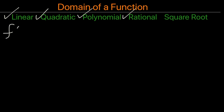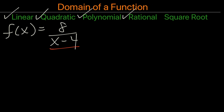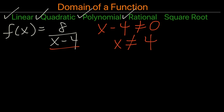Now, here's an example of a rational function. When we have a fraction, we need to pay attention to the denominator because it cannot be 0. So in this case, x minus 4 cannot be 0. If we were to solve this, x cannot be 4, because if we plug in 4, the denominator would be 0 and undefined.